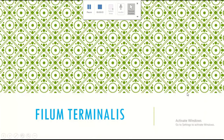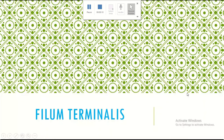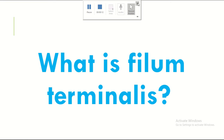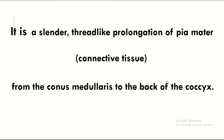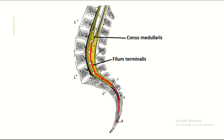Assalamu alaikum, welcome all to the Easy Human Anatomy channel. In this video I discuss the filum terminale — what is the filum terminale? It is a slender thread-like prolongation of the pia mater from the conus medullaris to the back of the coccyx. This is the conus medullaris and this is the filum terminale.